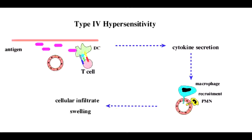What is the mnemonic to help you remember that type 4 hypersensitivity is the delayed type? The mnemonic is to remember 4th and last — this is the delayed. So the last one is the delayed hypersensitivity reaction.